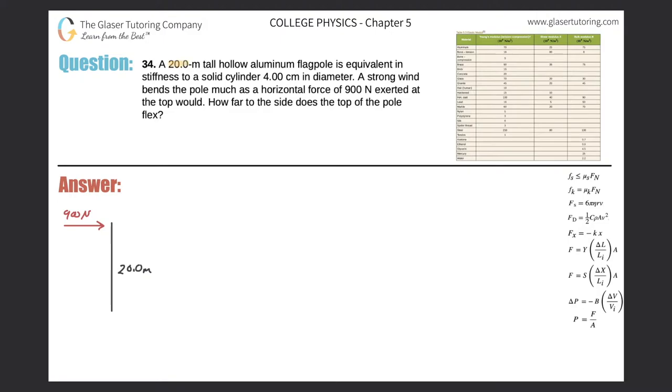Number 34. A 20 meter tall hollow aluminum flagpole is equivalent in stiffness to a solid cylinder four centimeters in diameter. A strong wind bends the pole much as a horizontal force of 900 newtons exerted at the top would. How far to the side does the top of the pole flex?